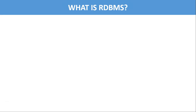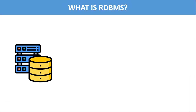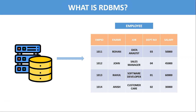What is RDBMS? RDBMS stands for Relational Database Management System. All modern DBMS like MySQL, Oracle, and Microsoft SQL Server are based on RDBMS. RDBMS stores the data in the form of tables, which is basically a collection of related data organized in the form of rows and columns. Data placed horizontally in a table is known as a row, and the vertical arrangement of data is known as columns. Every table is broken up into smaller entities called fields. For example, fields in an employee table are employee ID, employee name, job, department number, and salary.